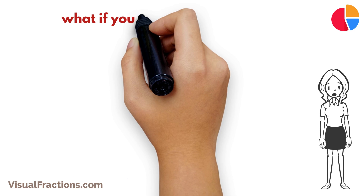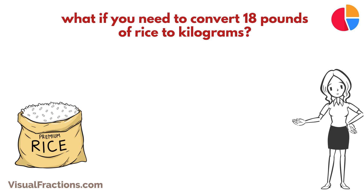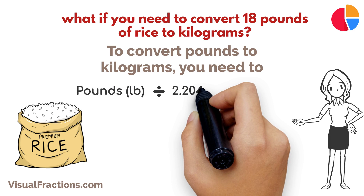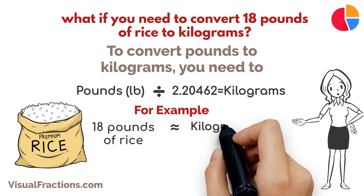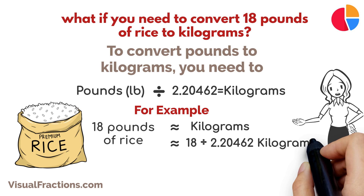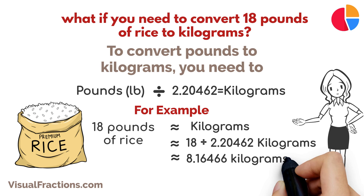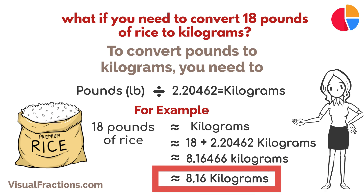But wait — what if you need to convert 18 pounds of rice to kilograms? Don't worry, we've got you covered. To convert pounds to kilograms, you need to divide the number of pounds by the conversion factor of 2.20462. Let's walk through an example of how to convert 18 pounds of rice to kilograms. We start by dividing 18 by 2.20462. This gives us approximately 8.16466 kilograms, and rounding to the nearest hundredth, our final answer is approximately 8.16 kilograms.